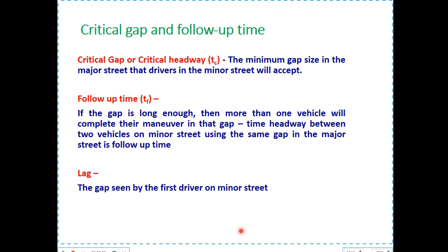The definition of critical gap and follow-up time is given here. Critical gap or critical headway is the minimum gap size in the major street that drivers on the minor street will accept — this is the gap size required to make the entry of one vehicle from the minor street. If the gap is long enough, more than one vehicle will complete their maneuver in that gap. The time interval between two vehicles on the minor street using the same gap in the major street is the follow-up time. The gap seen by the first driver on the minor street is called the lag.